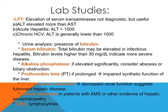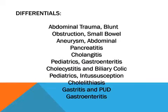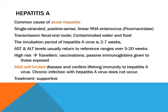Blood urea nitrogen and serum creatinine are important investigations to watch for hepatorenal syndrome. Serum ammonia should be measured in patients with altered mental status and evidence of hepatic encephalopathy. CBC has to be done in all patients presenting to a physician. Differentials to consider when these symptoms are presented include cholecystitis, cholangitis, pancreatitis, and sometimes gastritis, among other possibilities.